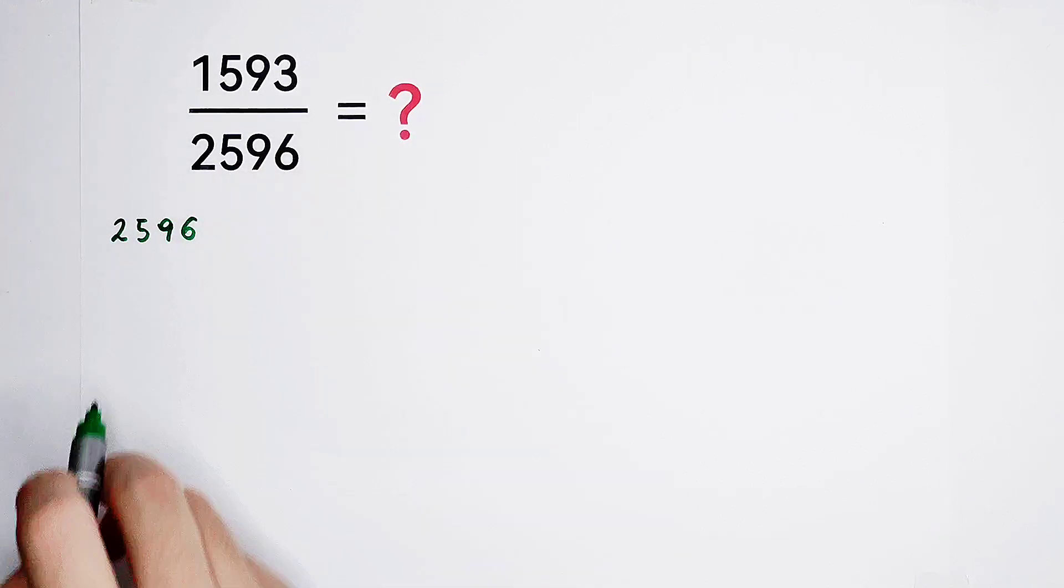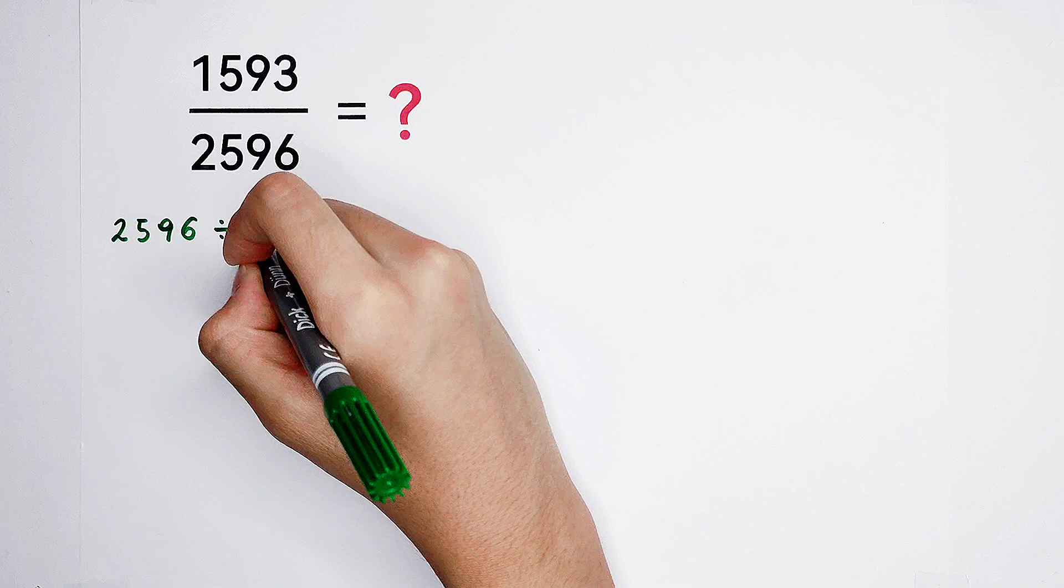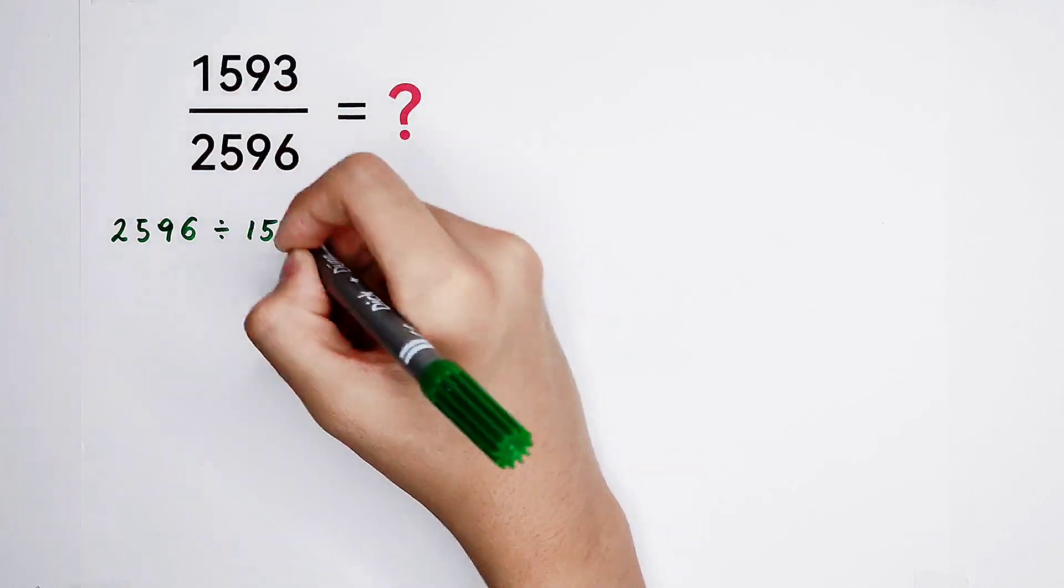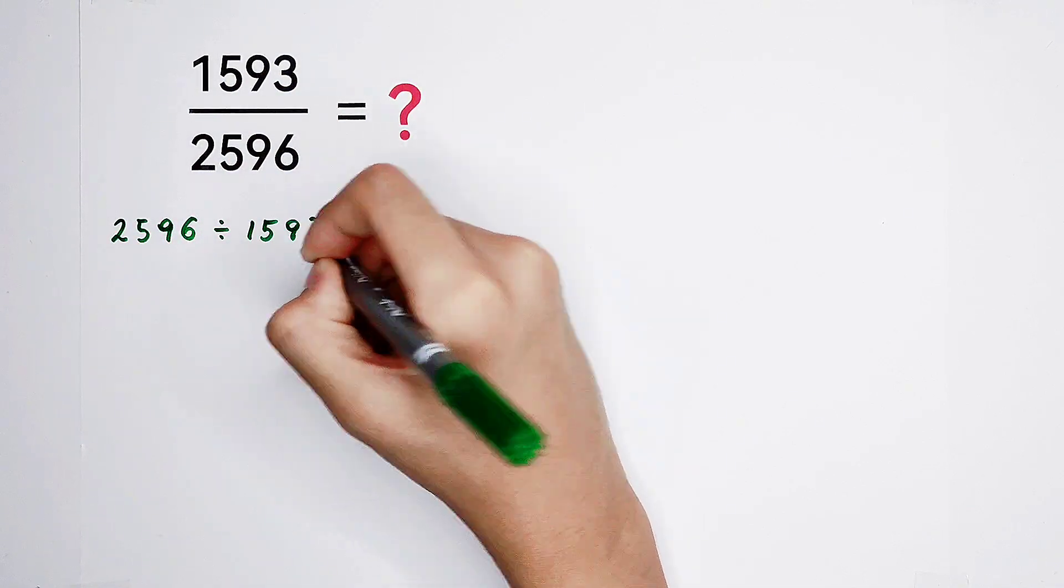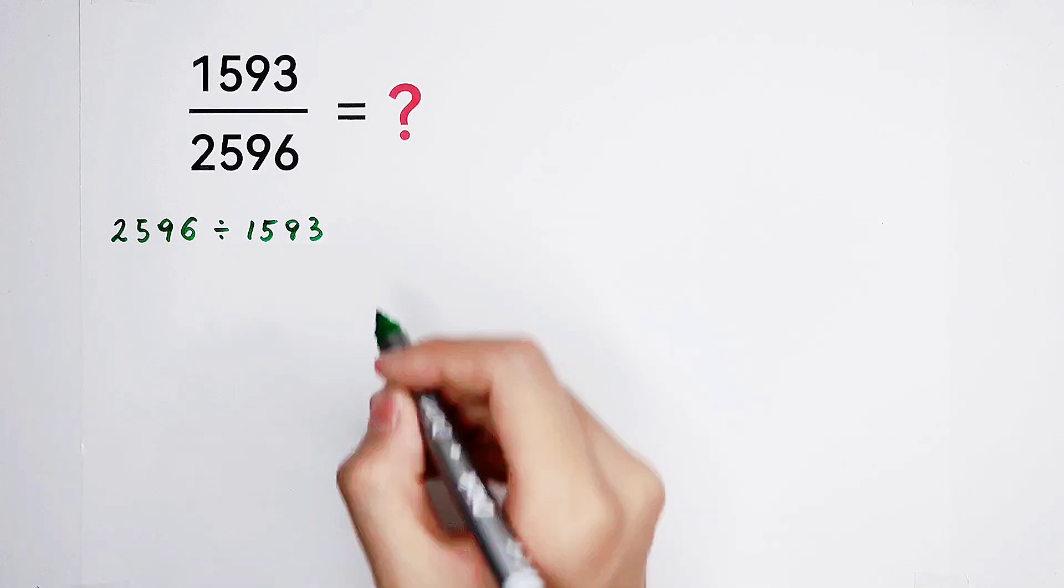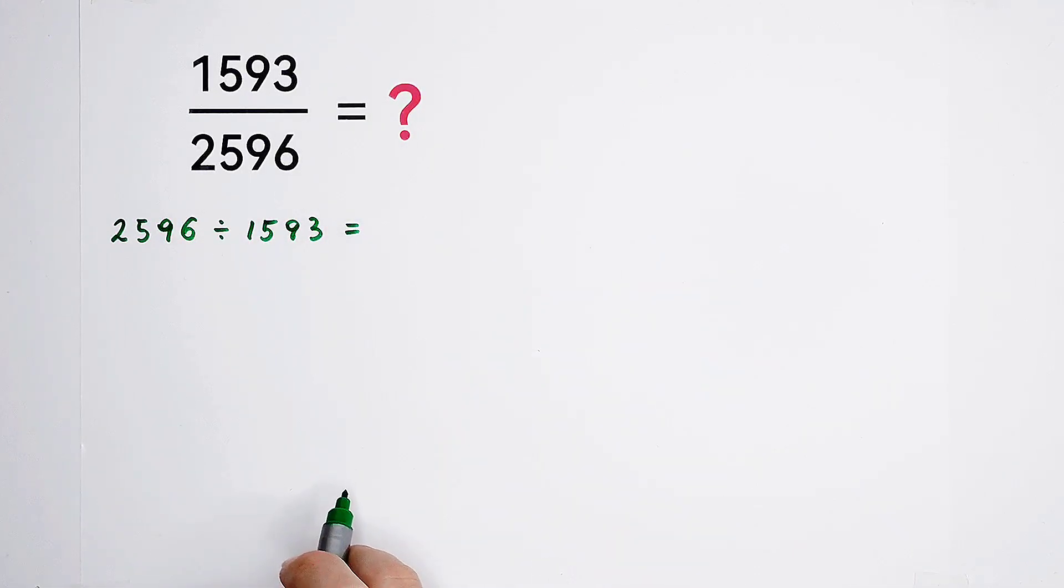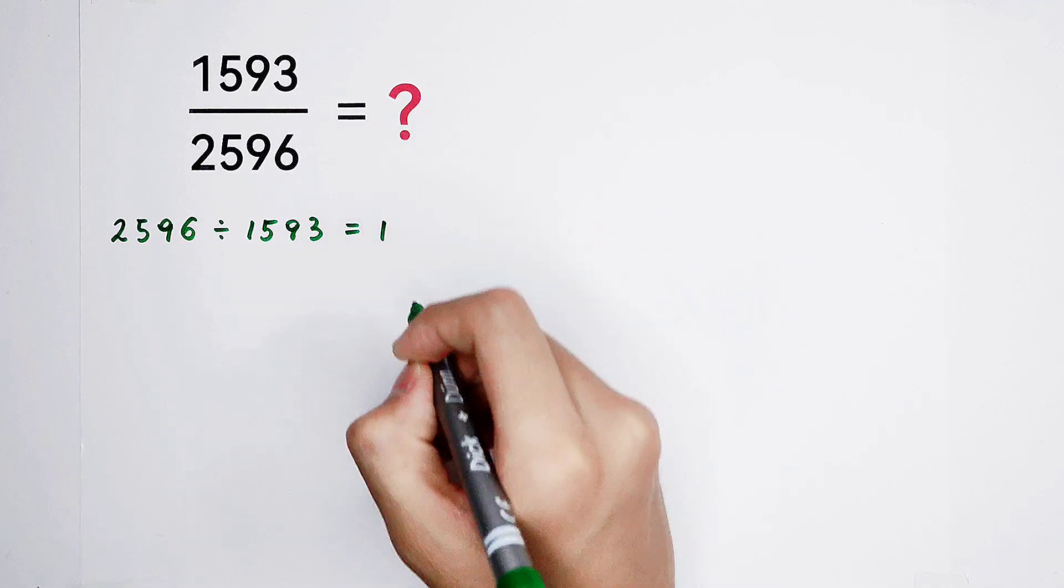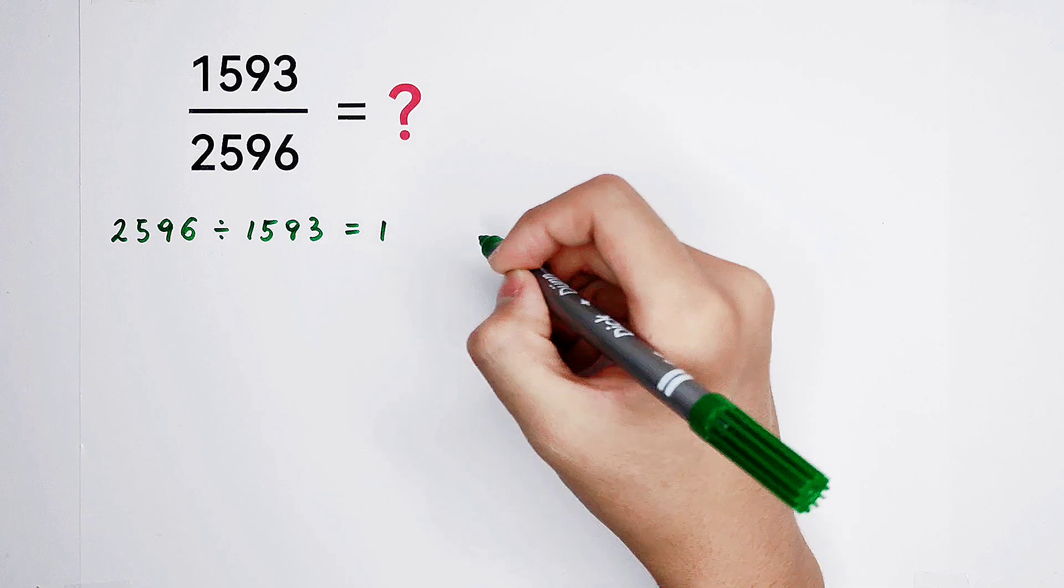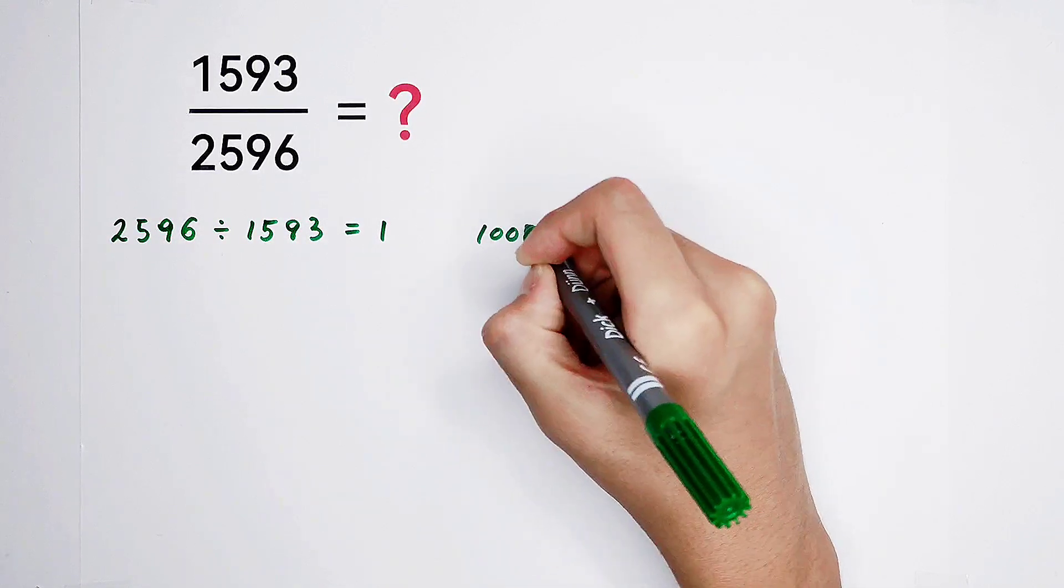2,596. Then, divide this number by our numerator, 1,593. Then, we will get a quotient and a remainder. Our quotient is 1. Our remainder is, I'm gonna write it here, 1,003.